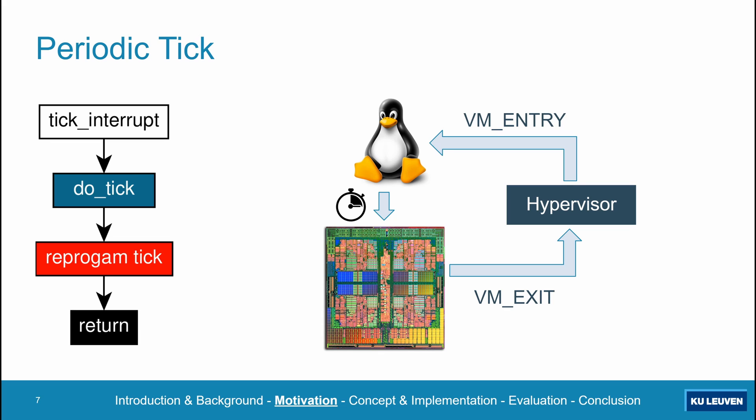Therefore, whenever a guest attempts to reprogram the timer hardware, the CPU triggers what is called a VM exit and passes control to a separate piece of software called a hypervisor. This hypervisor can be described as a kind of kernel for virtualized environments, responsible for coordinating hardware resources between virtual machines and enforcing isolation between them. In the case of a guest attempting to alter the timer hardware, the hypervisor will simply program its own timer identical to the one the VM attempted to program, and returns control back through a VM entry. When this hypervisor-level timer expires, the CPU triggers another VM exit, and the hypervisor injects a virtual tick interrupt into the virtual machine.